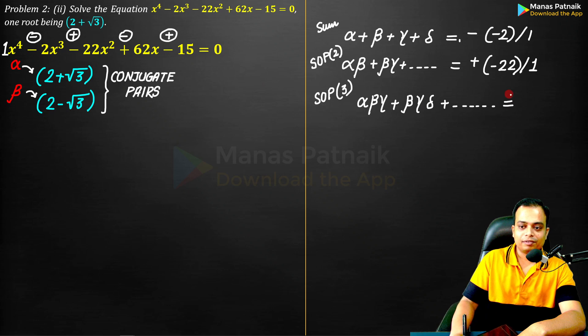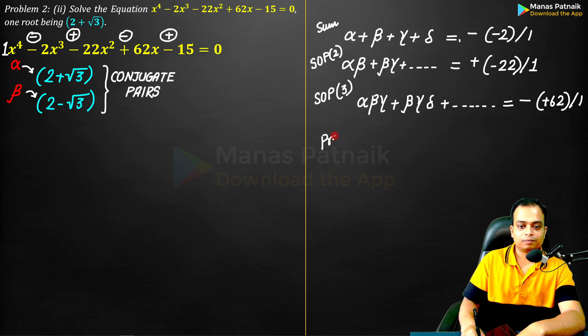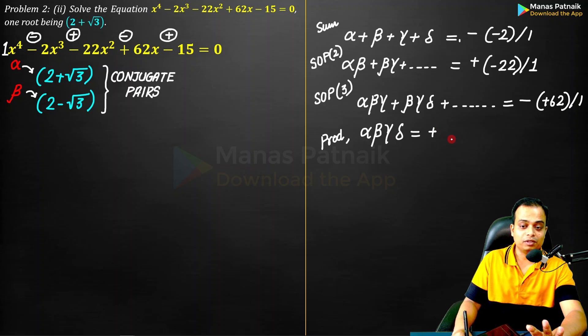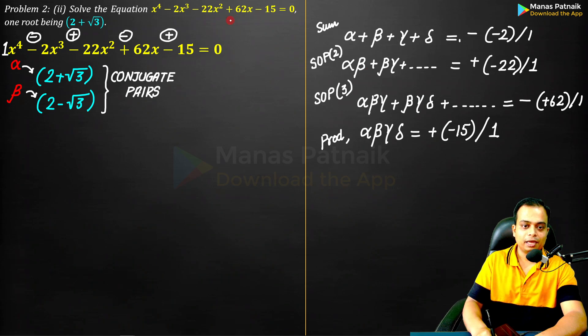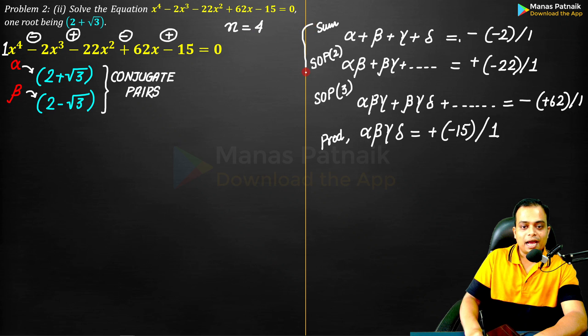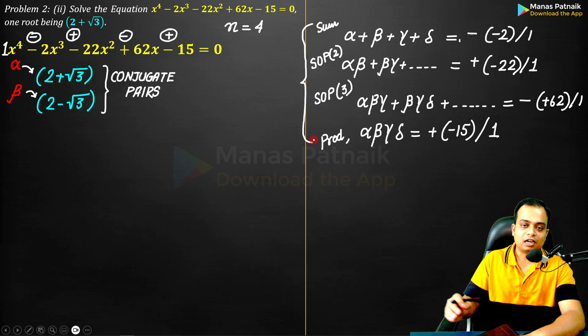All of this is going to be equal to negative, then positive 62/1. And finally, the product. When you take the product, this is going to be simply αβγδ. Please observe how I am making all of these relationships: -(-15)/1. This is how all the relationships can be set up. And since n = 4 here, there are going to be as many as 4 relationships between α, β, γ, and δ.